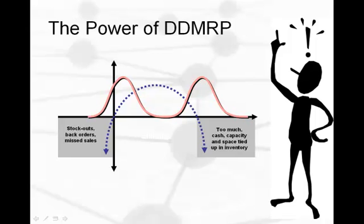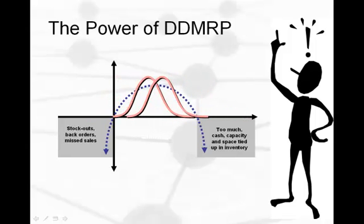As we discussed in our video Fixing the Planning Problem, traditional MRP tactics and tools tend to create a bimodal distribution, where items either tend to be overstocked or understocked. DDMRP allows companies to get out of that constant oscillation between too little and too much, and all of the penalties and costs that come with that oscillation. It allows companies to live in that high-return-on-capital-employed zone that is so critical to sustainable, profitable growth.